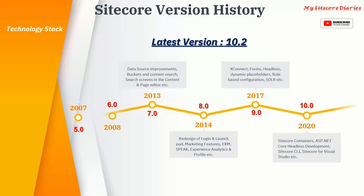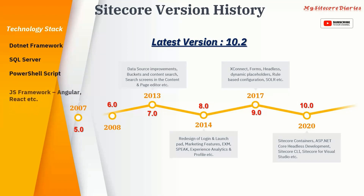Let's look at the different technology stacks that Sitecore supports or requires. Sitecore is a .NET-based platform — previously it used Web Forms, but now it has completely moved to MVC. You also need SQL Server for databases. PowerShell scripting is also needed for some support tasks. For JavaScript frameworks — from Sitecore 9.0, they introduced the headless feature, so you may need Angular or React via Sitecore JSS. Solr is required as well, since the content search mechanism is Solr-based. That is the technology stack for Sitecore development and support.